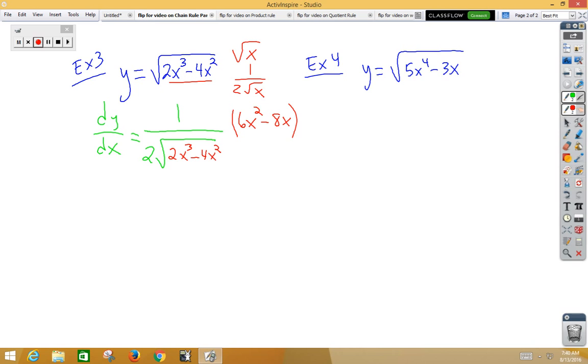In this particular problem, we can do a little canceling with the 2 and the 6x squared minus 8x. So I would probably reduce that. And on the top, I would have 3x squared minus 4x. On the bottom, root 2x cubed minus 4x squared.